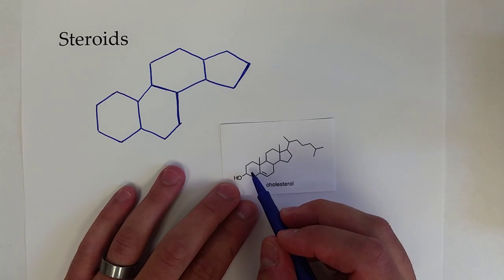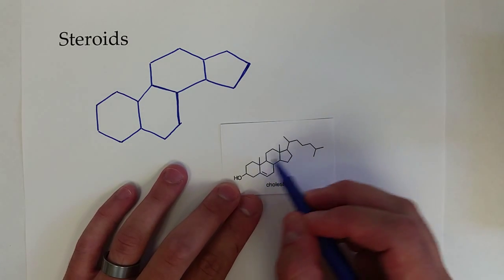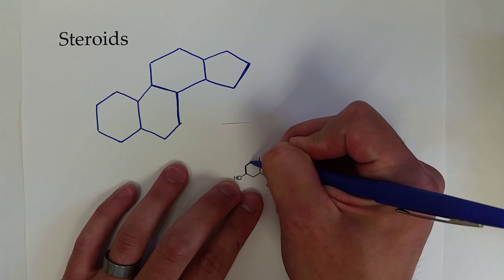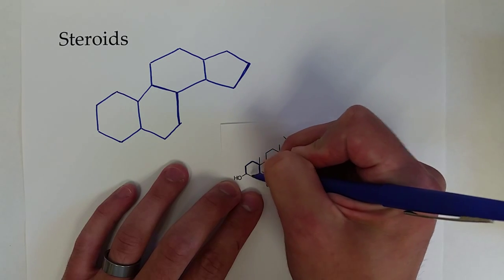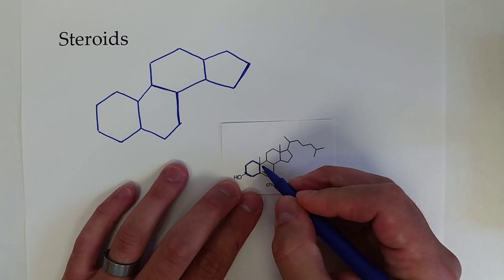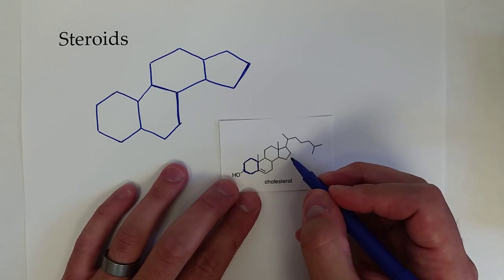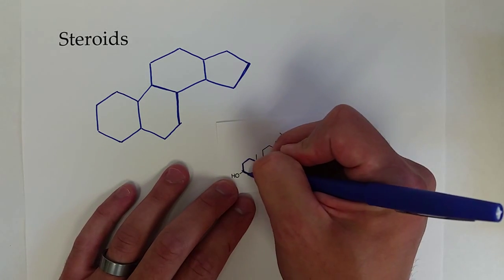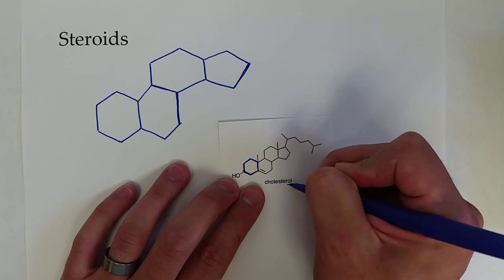So we got the first six-member ring here, the second one right there, third, and then there's the five-member ring. Cholesterol - you might guess from your organic chemistry - ending in 'ol', it has a hydroxyl group there. It also has a double bond in that second ring.